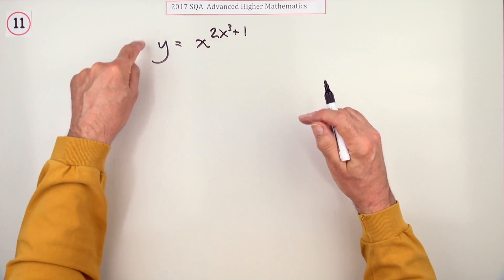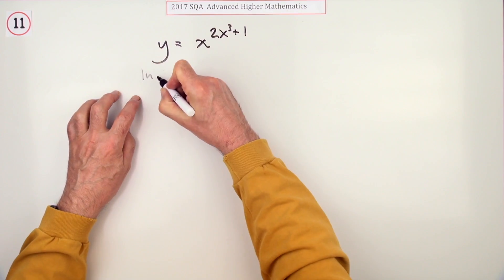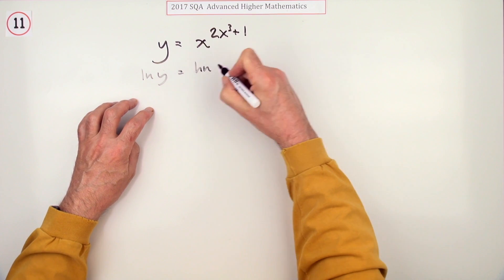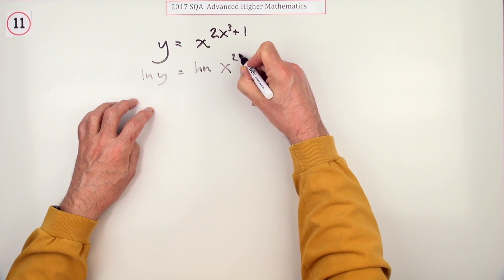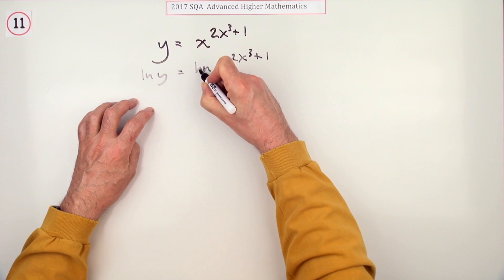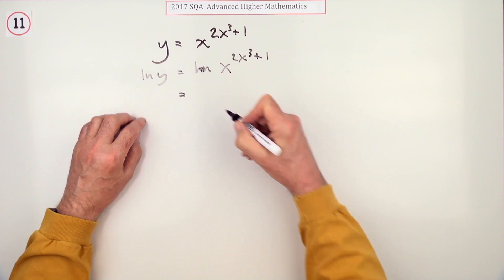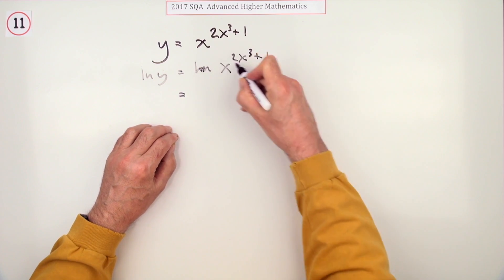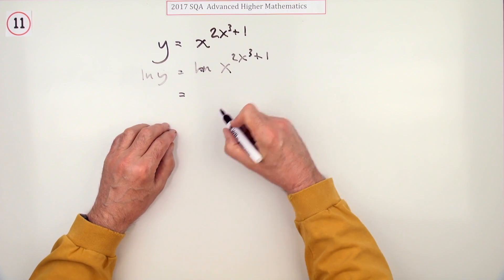We say use logarithmic differentiation, so take the logarithm of both sides. So ln of y equals ln of x to the 2x cubed plus 1. The handy thing about that is by applying the logarithm you can get this index that was sitting up there hiding up a tree.